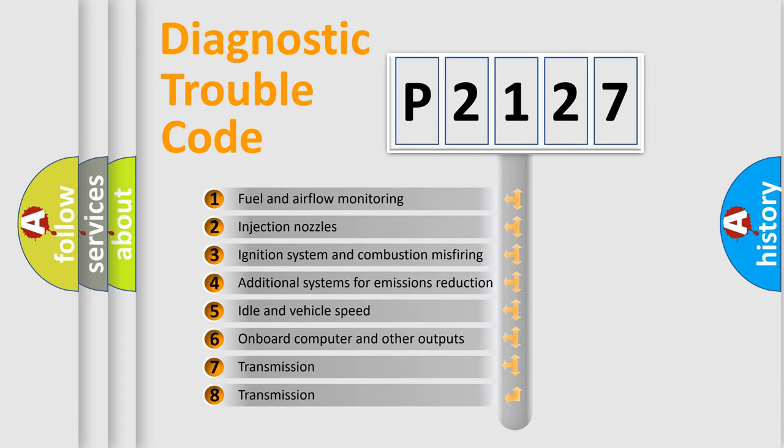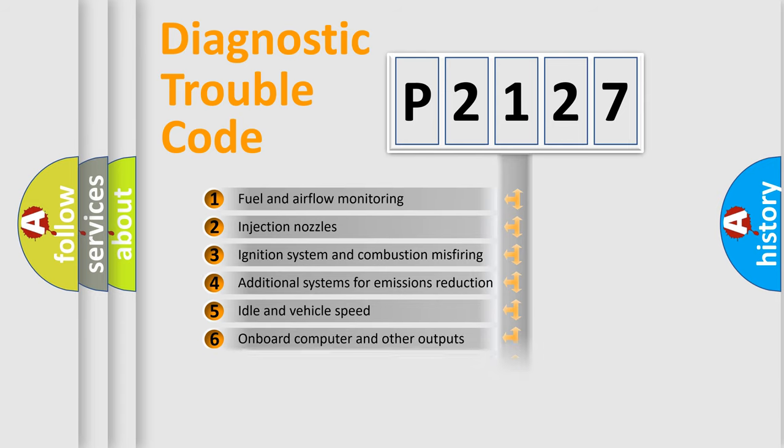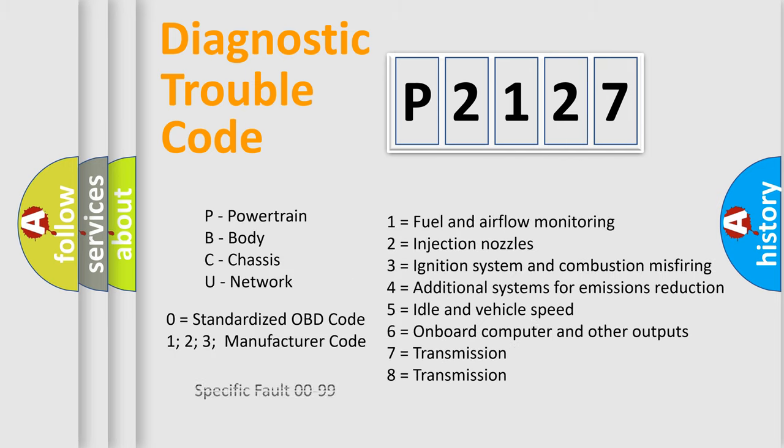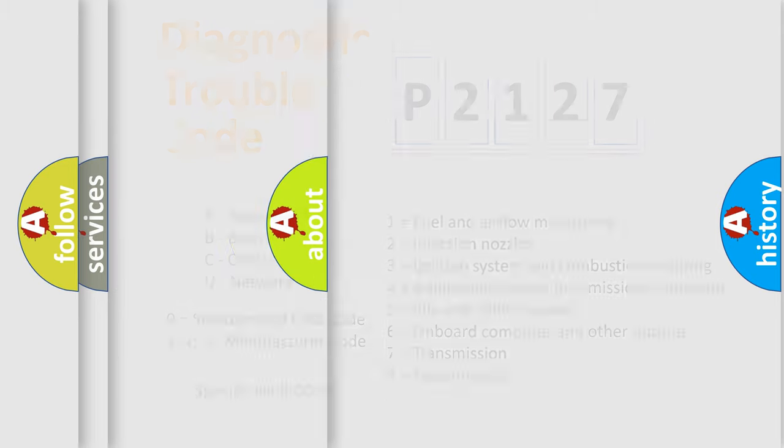The third character specifies a subset of errors. The distribution shown is valid only for the standardized DTC code. Only the last two characters define the specific fault of the group. Let's not forget that such a division is valid only if the other character code is expressed by the number zero.